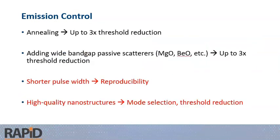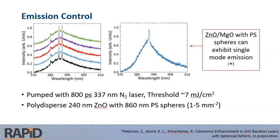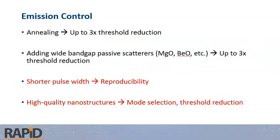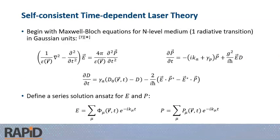There are some other methods for emission control. You can anneal to get to lower threshold, as you're essentially annealing away structural defects. Adding magnesium oxide or another wide band gap passive scatterer—something that doesn't provide any gain—gives you another threshold reduction. What we found is that shorter pulse width does give us reproducibility. In the previous slide, these were pumped with 800 picosecond pulses, and you can see in the individual emission spectrum we do get something that is very highly reproducible. There's this question as to why a shorter pulse width, even with a lower quality gas laser, is going to give you a more reproducible spectrum. And why does adding a high quality nanostructure matter? Clearly there's some mode selection mechanism. It also seems to participate in threshold reduction, so that also needs to be explained.